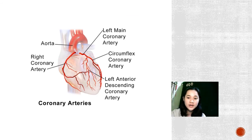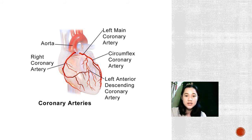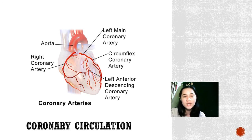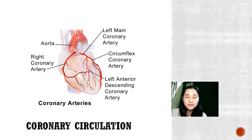This is the coronary arteries of the heart. The red vessels are the arteries that supply oxygen to the muscle, tissues, and cells of the heart. Then there are also veins where blood containing carbon dioxide will return the blood to the heart itself.